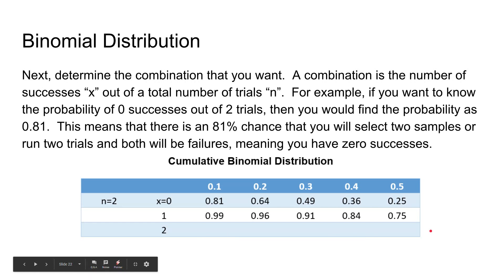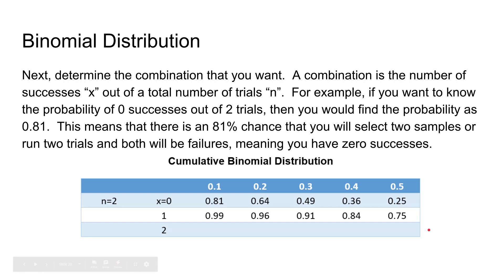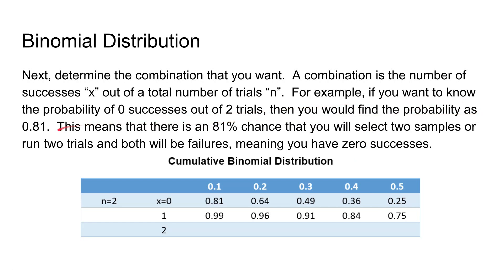As an example: the probability of zero successes out of two trials — x equals 0, n equals 2 — is 0.81. This means there is an 81% chance that you will run two trials and both will be failures, meaning zero successes.